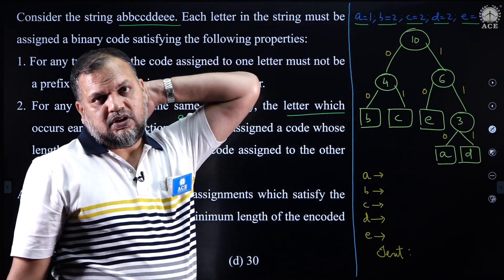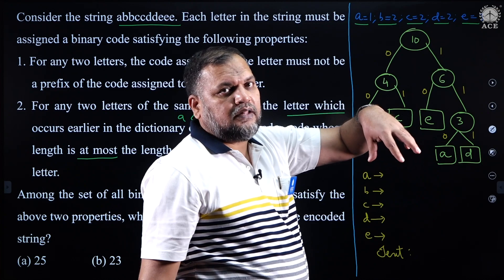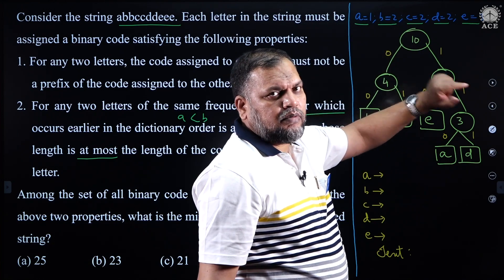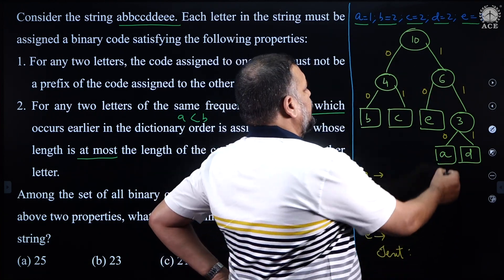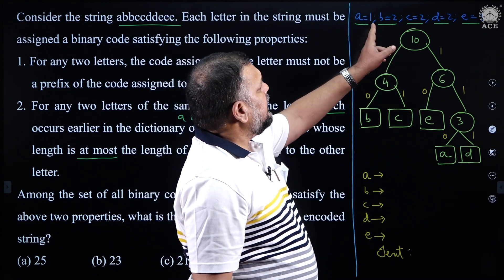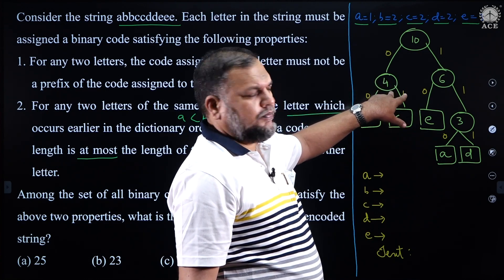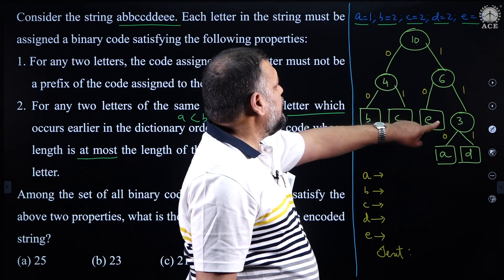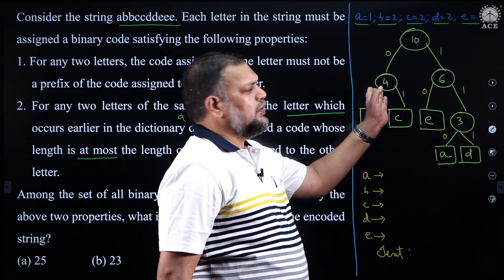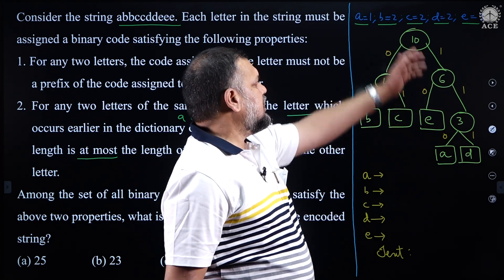To satisfy property 2, I first merge a and d (frequencies 1 and 2) giving 3, because d should have more bits. Then I merge b and c (frequencies 2 and 2) giving 4. Now I have values 3, 3 (from a+d and e), and 4. I merge the two 3s to get 6, then merge 4 and 6 to get 10. Following the convention of left branch = 0 and right branch = 1 starting from root, I assign the binary codes.